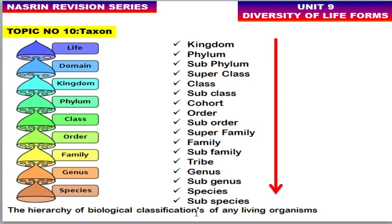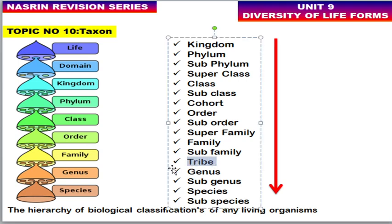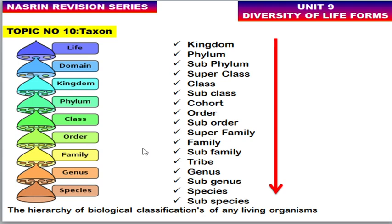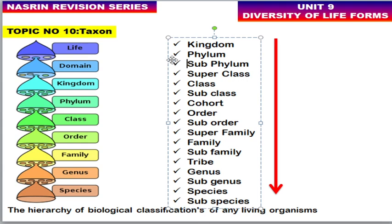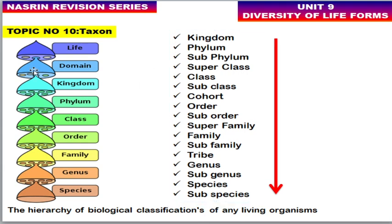The biological classification hierarchy is: Life, Domain, Kingdom, Phylum, Class, Order, Family, Genus, and Species. In more detail: Kingdom is classified into Phylum, Subphylum, Superclass, Class, Subclass, Cohort, Order, Superfamily, Family, Subfamily, Tribe — which is above the genus level and below the family level — then Genus, Subgenus, Species, and Subspecies. CSIR NET has asked questions specifically about taxonomic order.